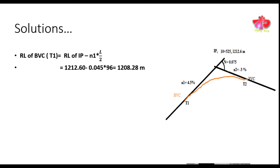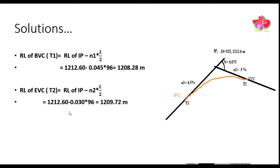Similarly, the RL of the end of vertical curve (EVC) is found using: RL of EVC = RL of IP − N2 × (L/2), since the distance from the apex to each tangent point is L/2. Solving this, we get the RL of EVC as 1209.72 meters.